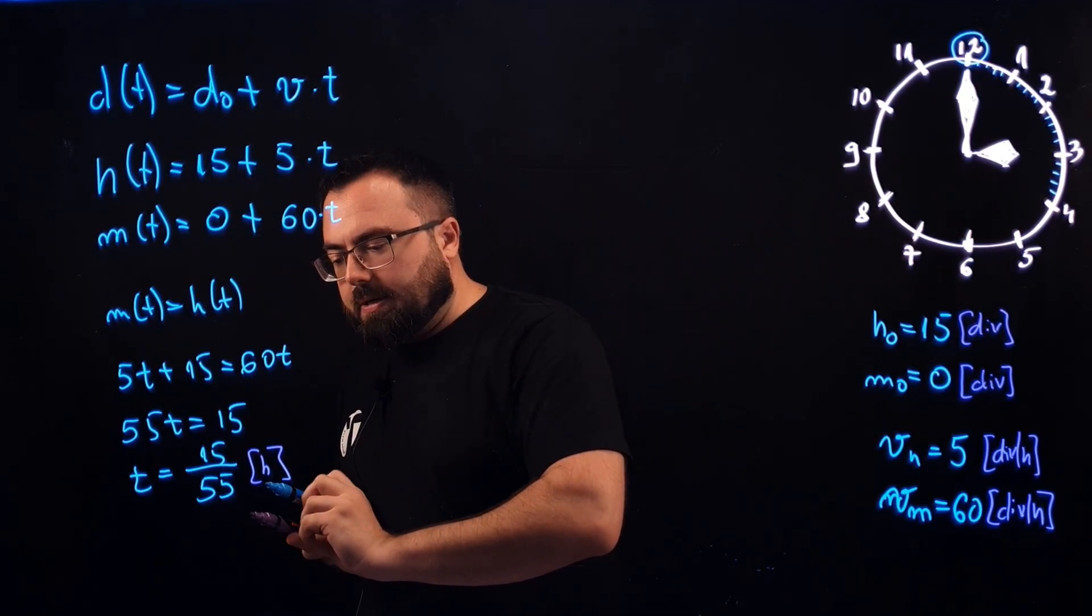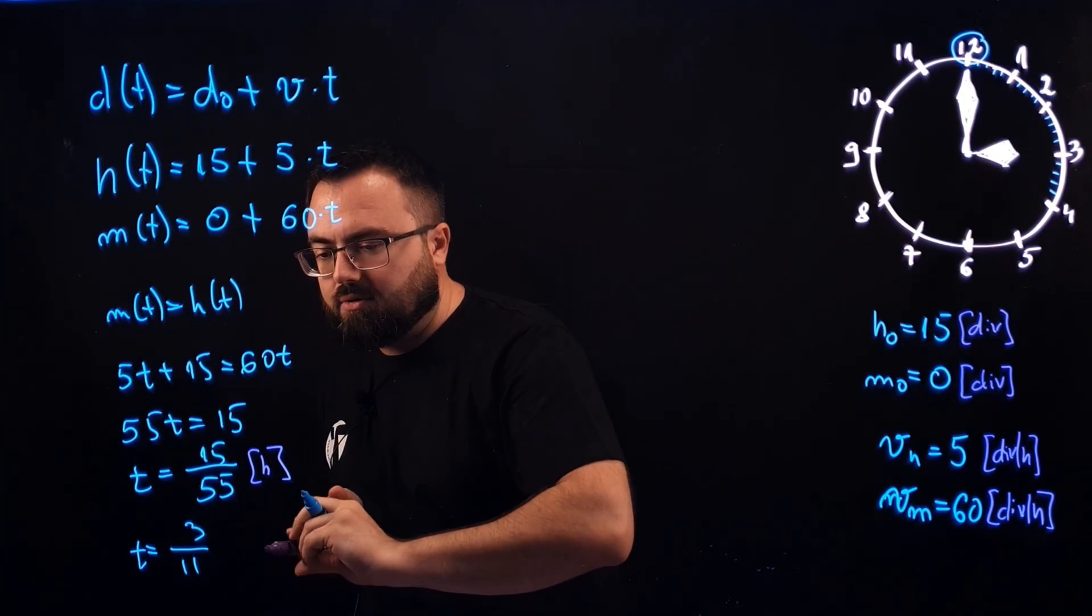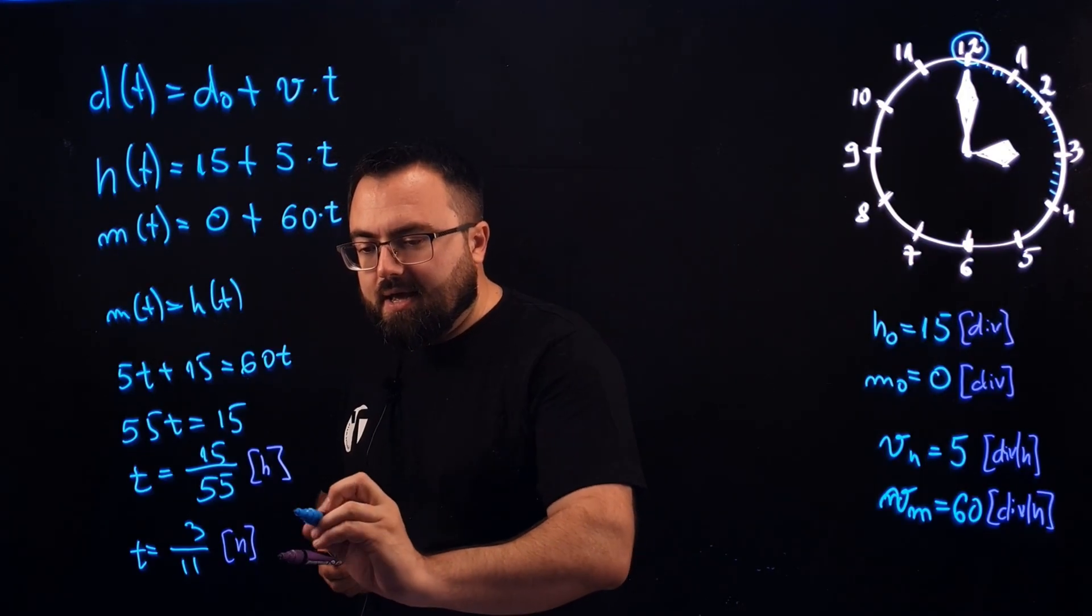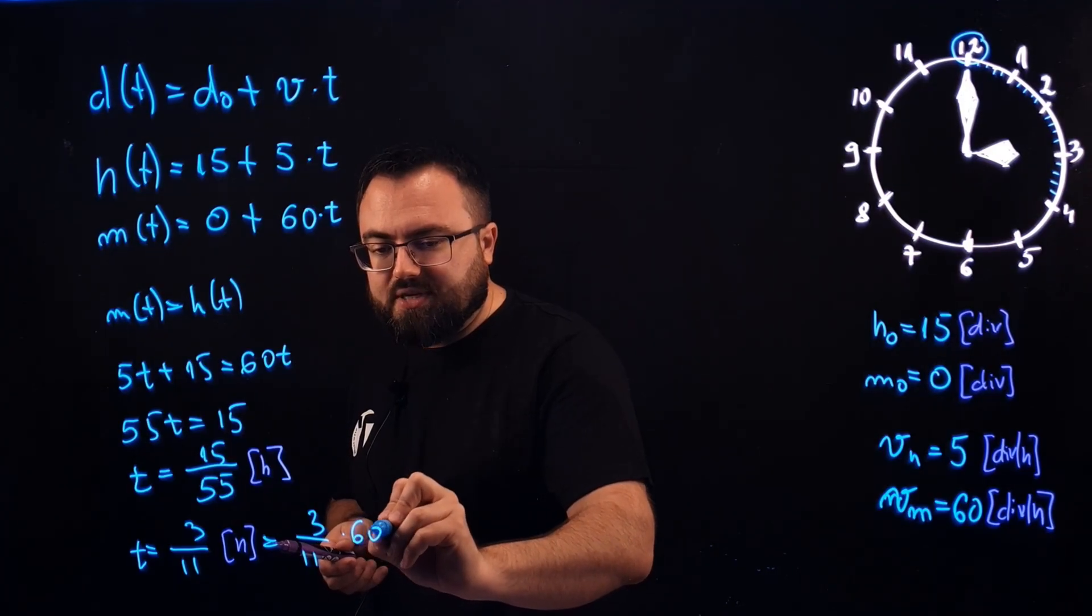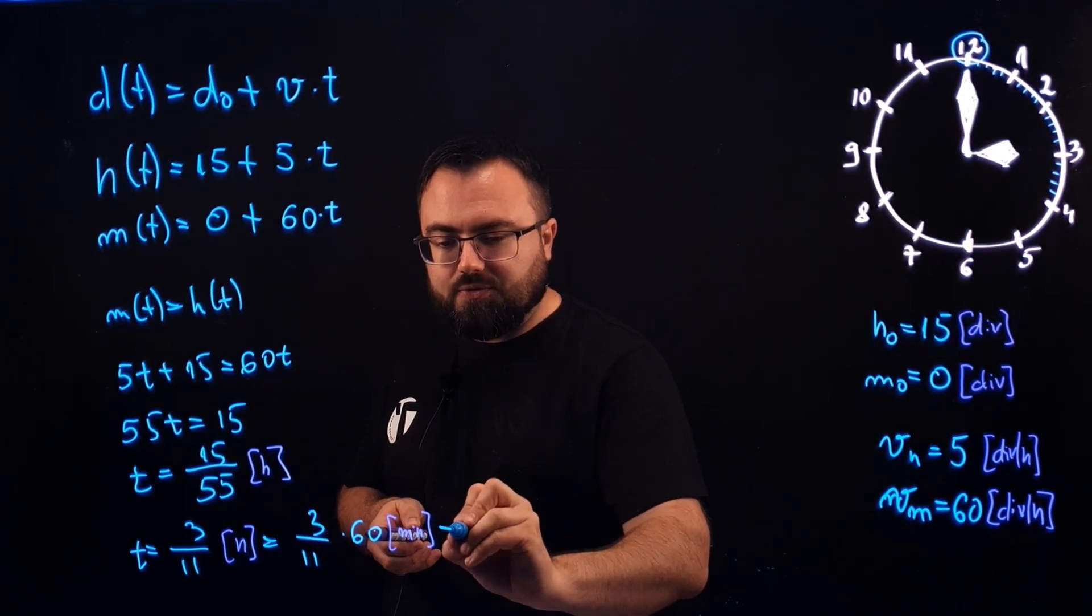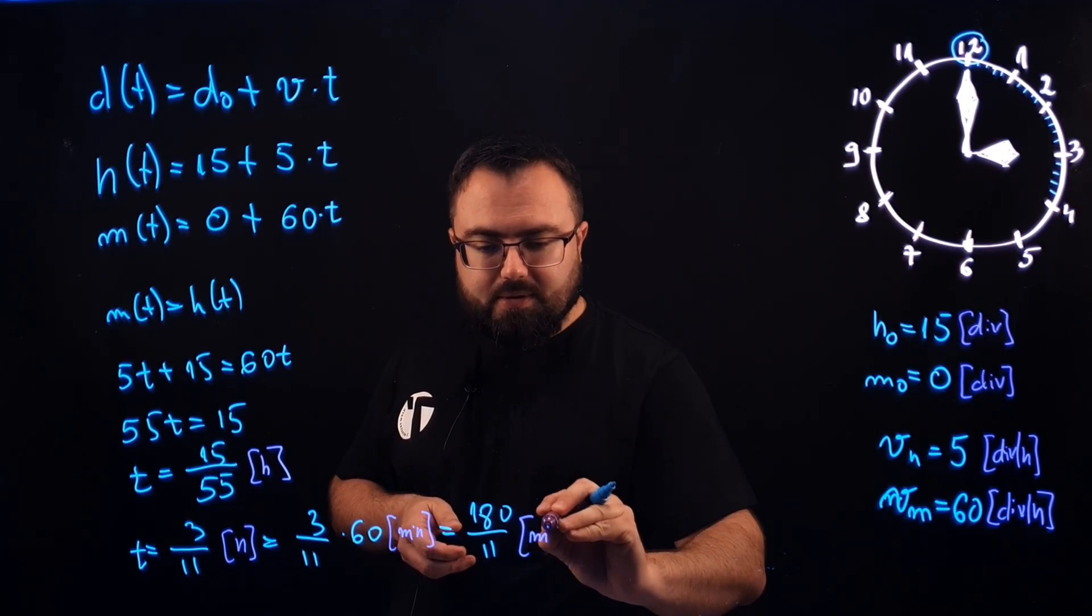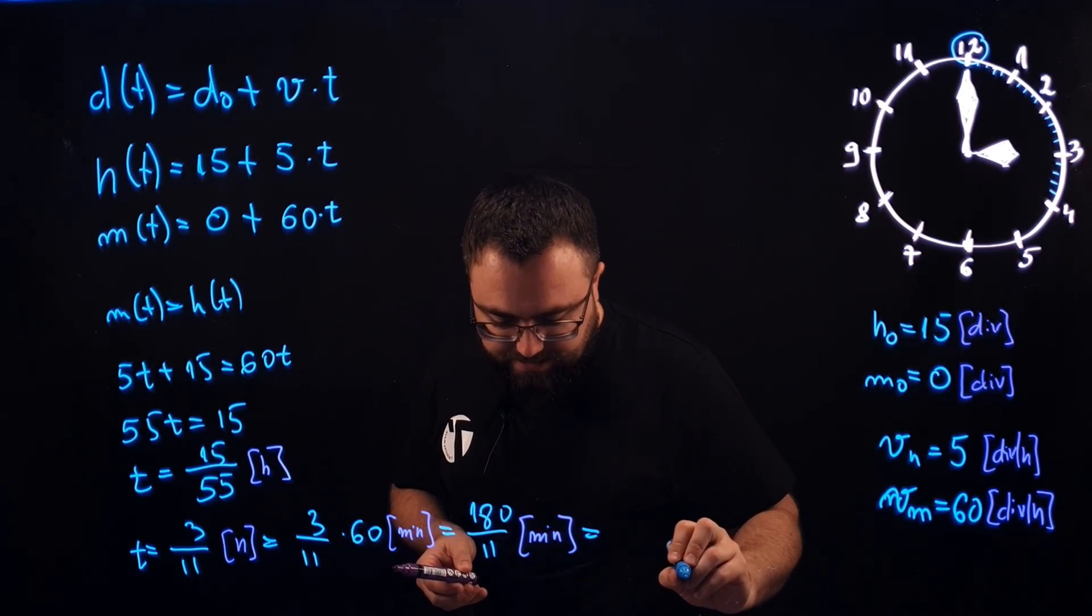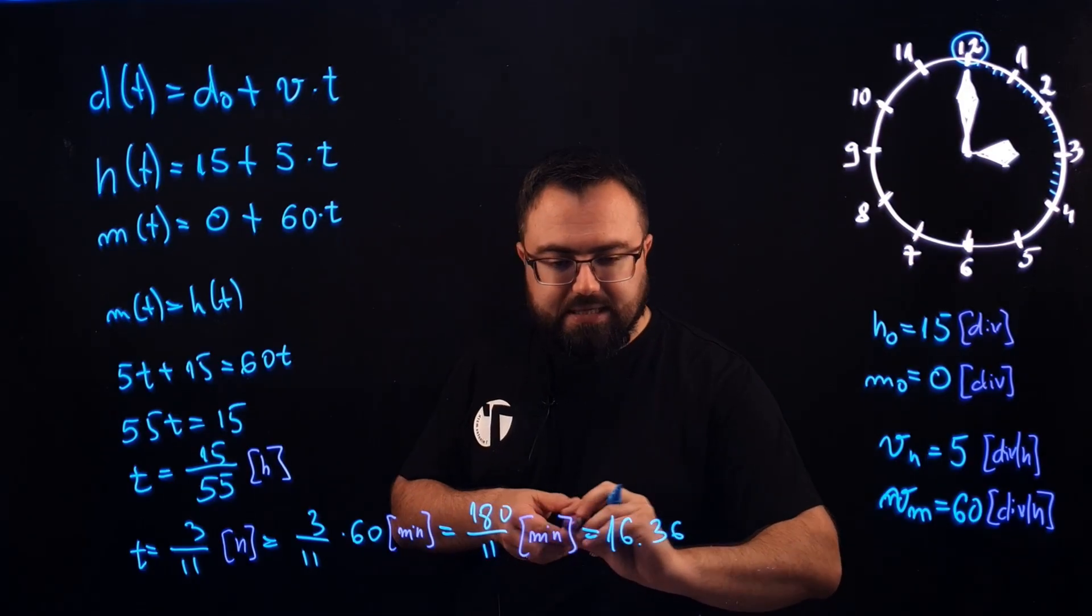We're going now further. t is equal to 3 divided by 11, and this is 3 over 11 times 60 and now we are going into minutes. This is 180 divided by 11 in minutes and this is 16.36 approximately in minutes.